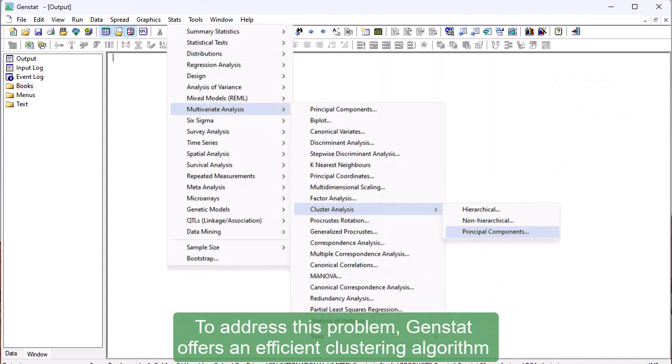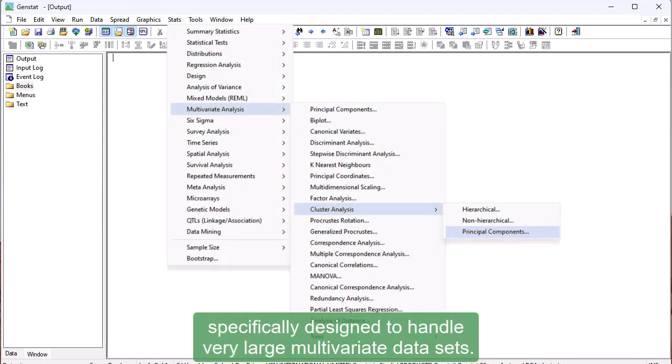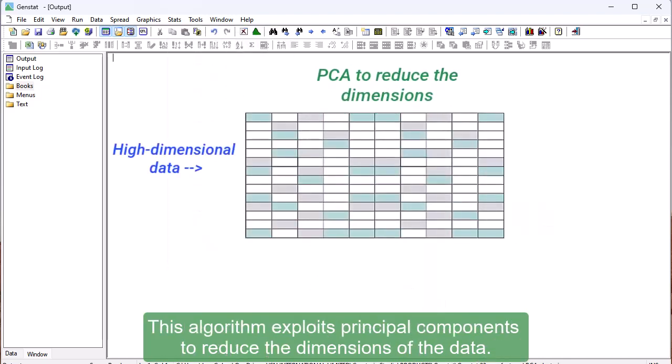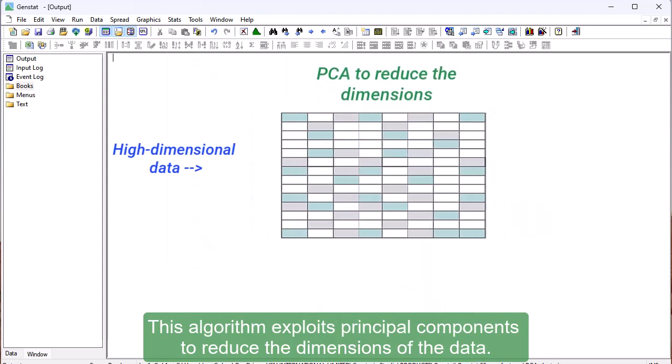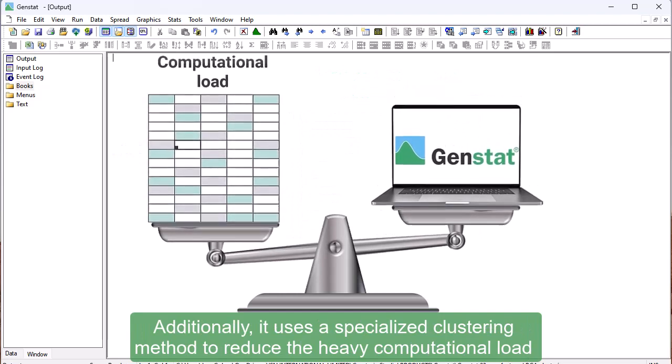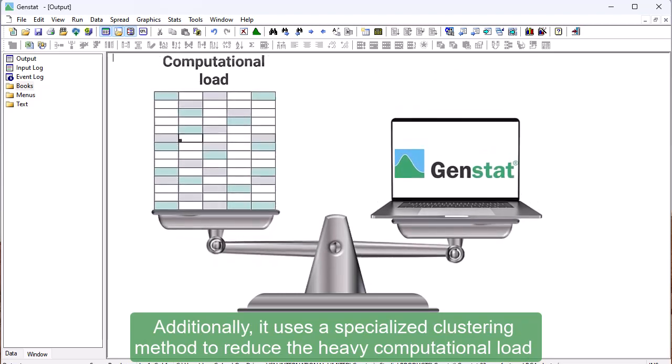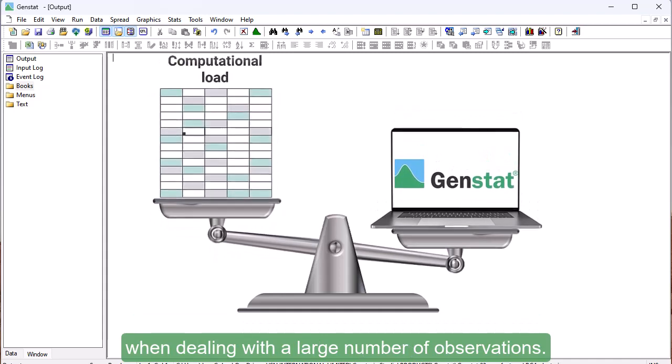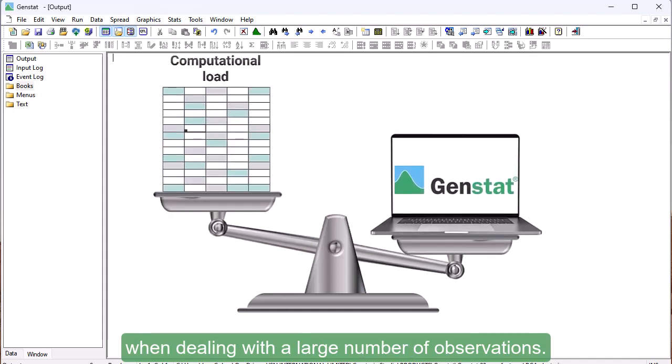To address this problem, GENSTAT offers an efficient clustering algorithm specifically designed to handle very large multivariate datasets. This algorithm exploits principal components to reduce the dimensions of the data. Additionally, it uses a specialized clustering method to reduce the heavy computational load when dealing with a large number of observations.